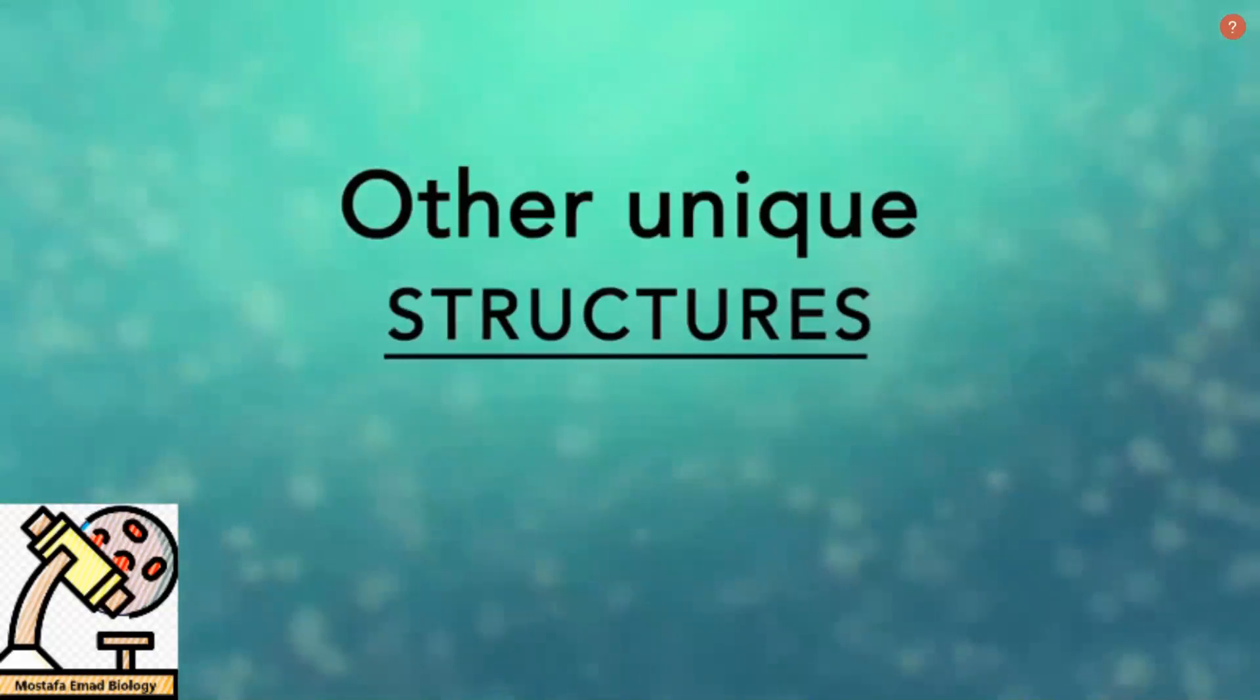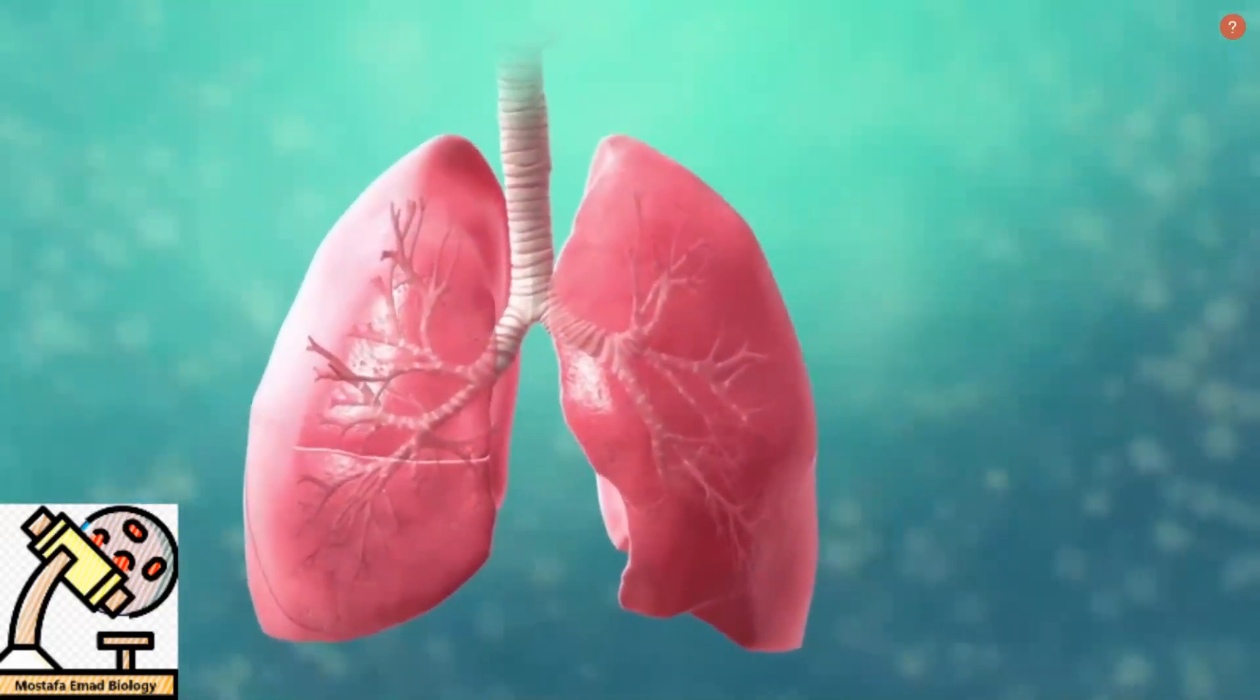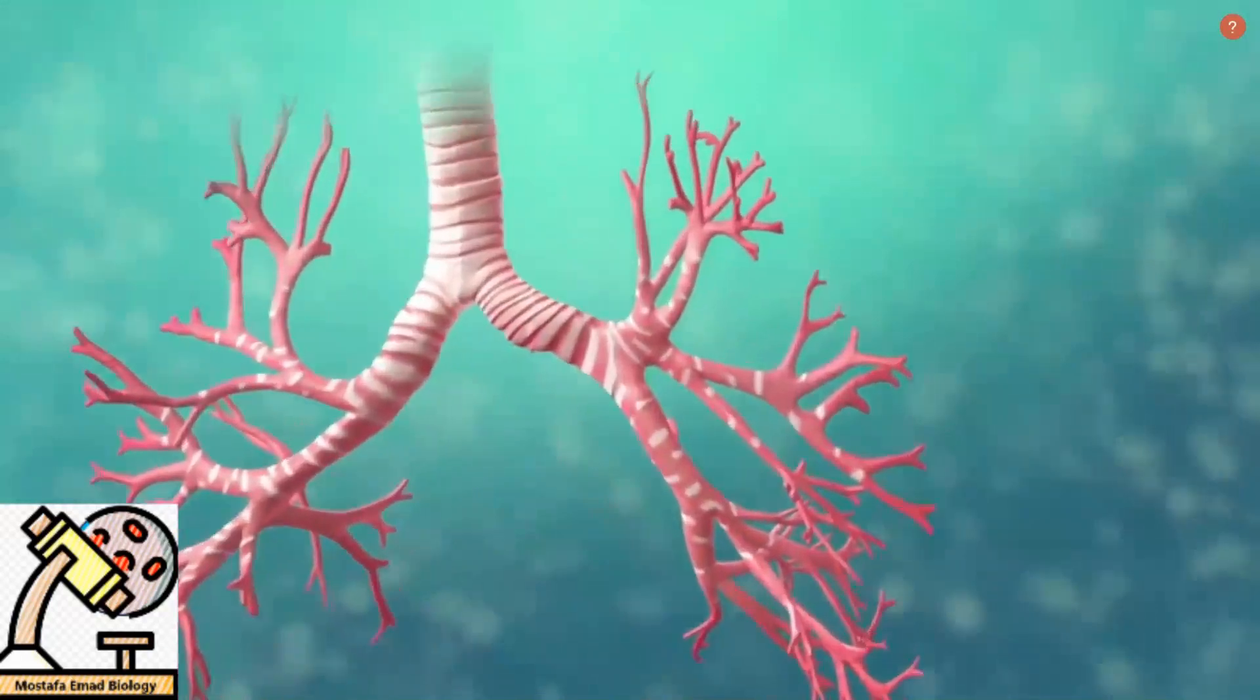There are many unique structures that only some cells have. Here are just a few. In humans, for example, the respiratory tract is lined up with cells that have cilia.